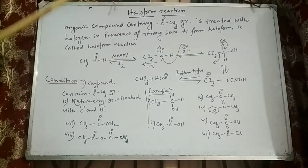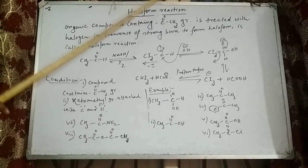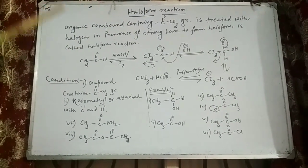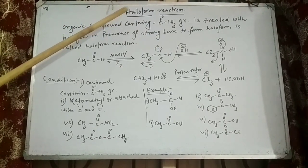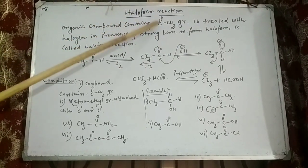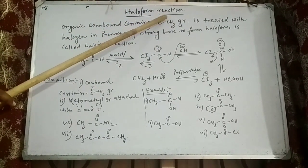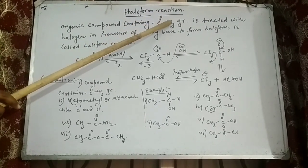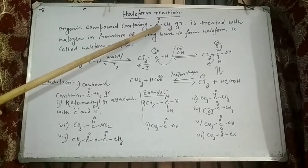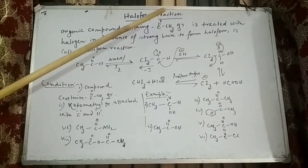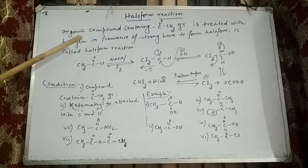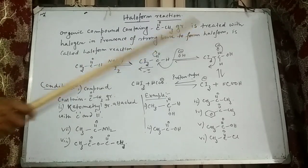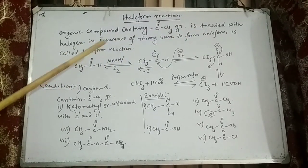The first topic is the Haloform reaction. The organic compound containing a ketomethyl group — that is, a keto group (C=O) and a CH3 methyl group — is treated with halogen in the presence of a strong base to form a haloform. This is called the Haloform reaction.